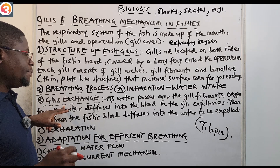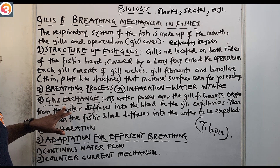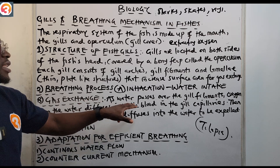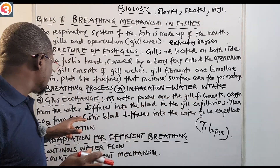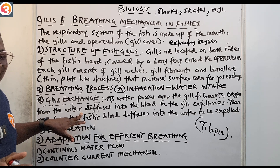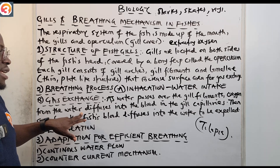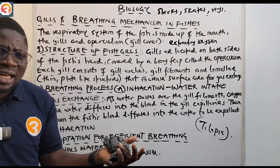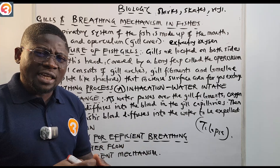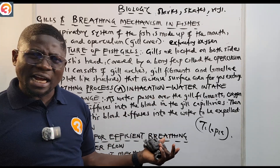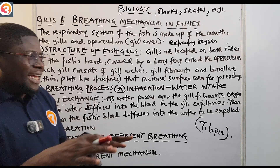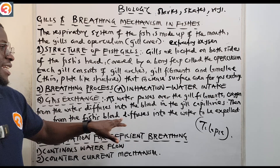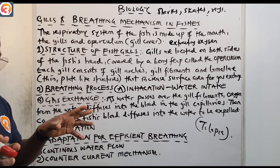The next part is gaseous exchange, which occurs at the gill filaments. As water passes over the gill filaments, oxygen from the water diffuses into the blood in the gill capillaries. Carbon dioxide must also be expelled: CO2 from the fish's blood diffuses into the water to be expelled. So one gas enters while the other exits at the gill filaments.